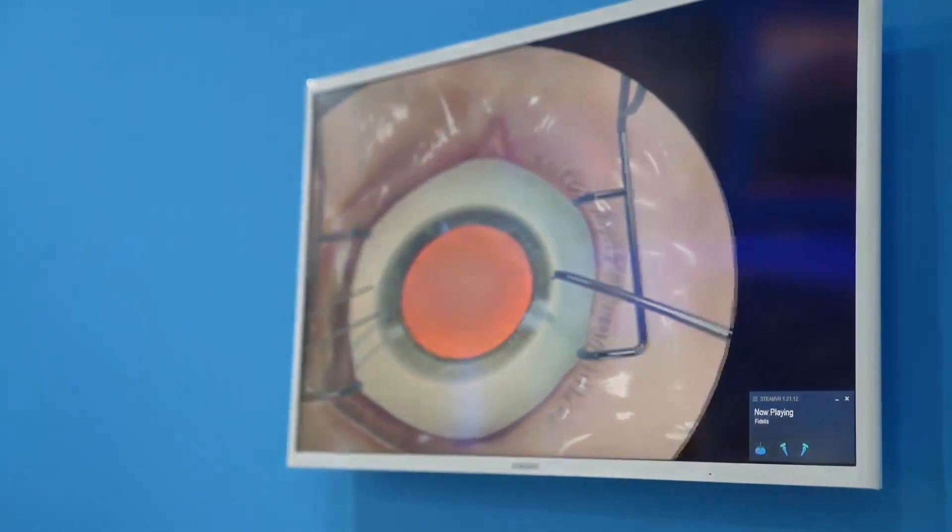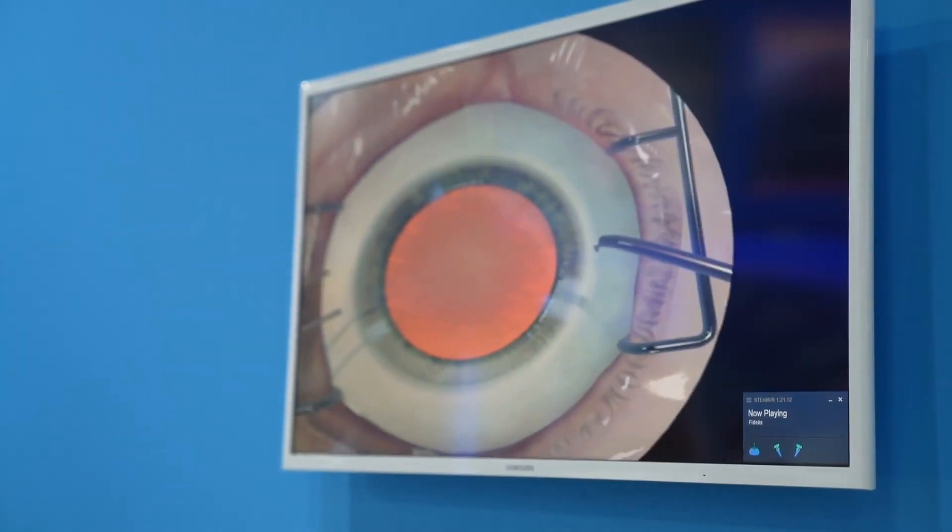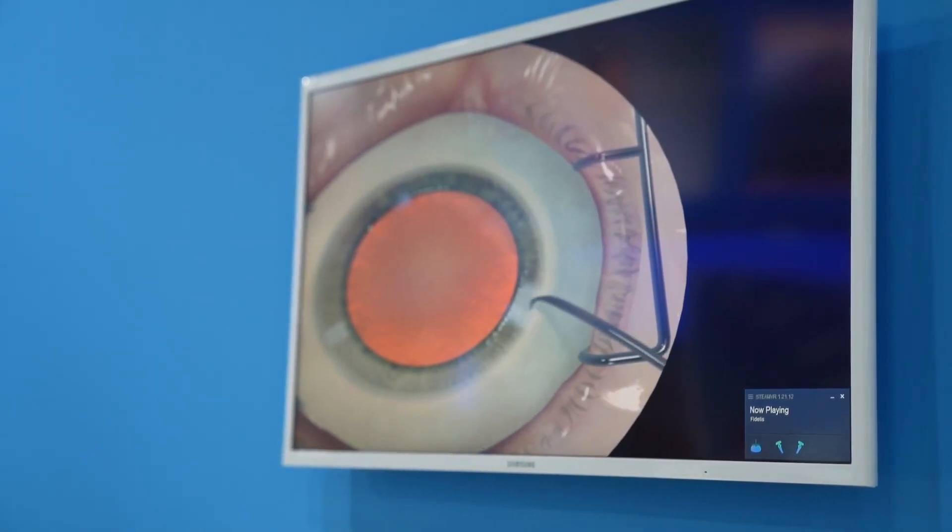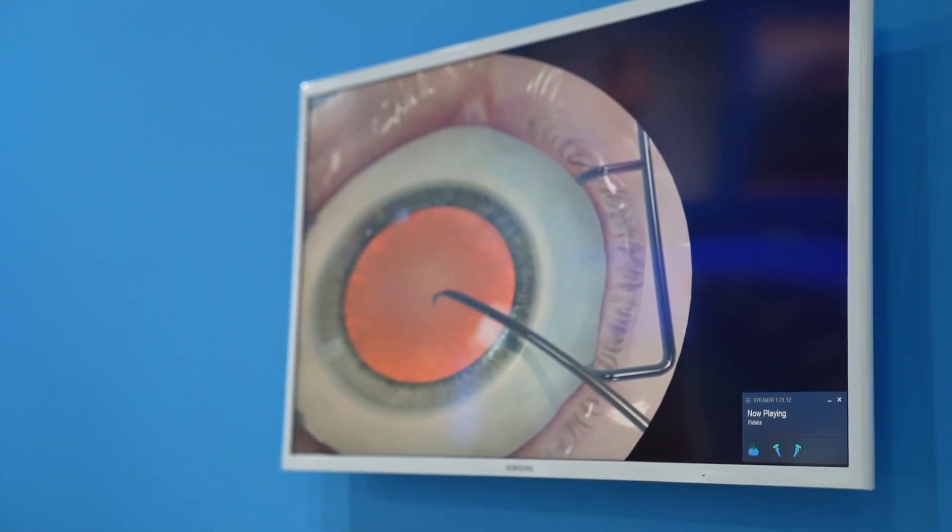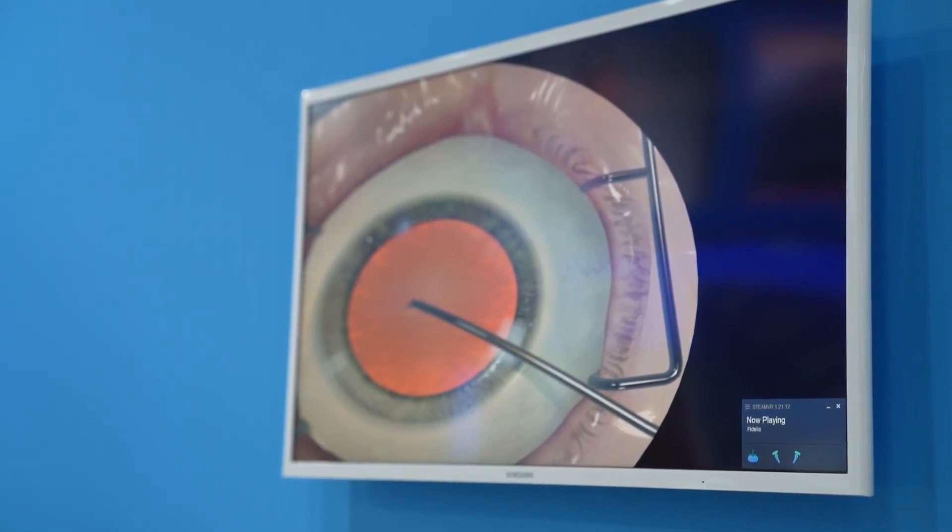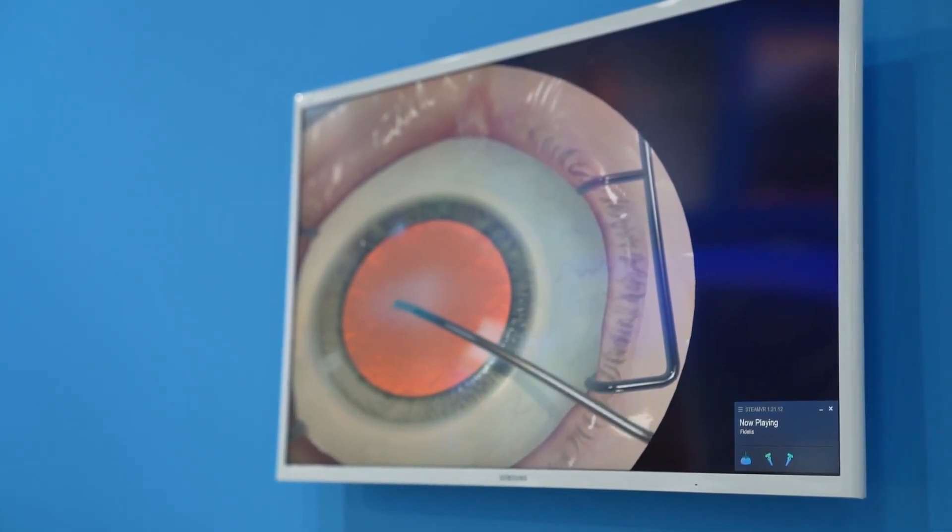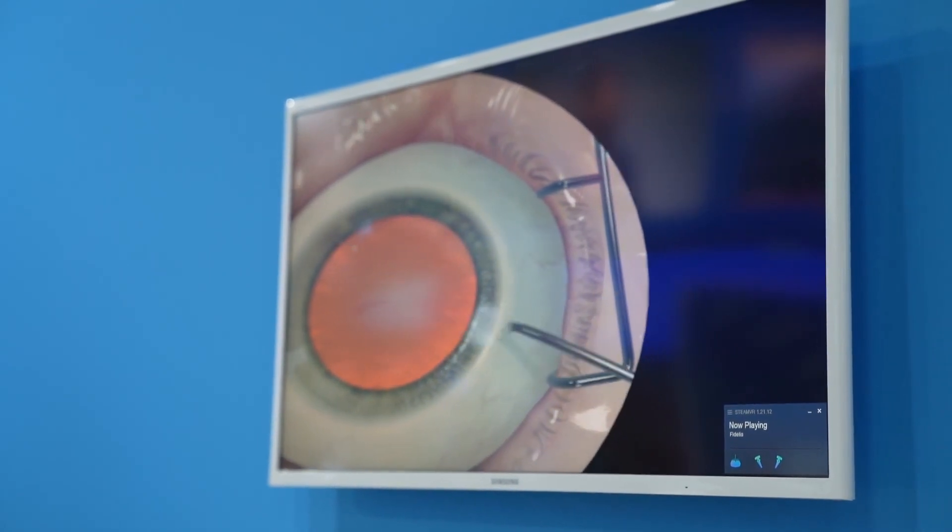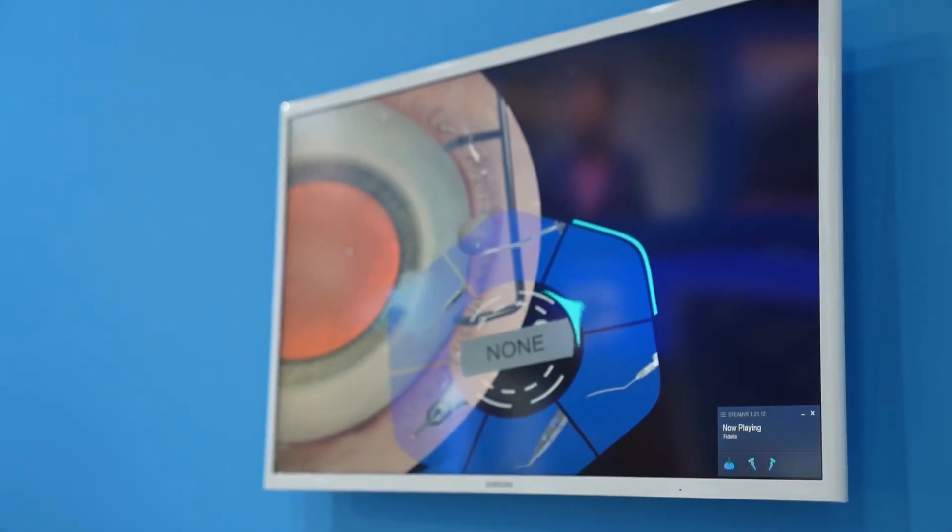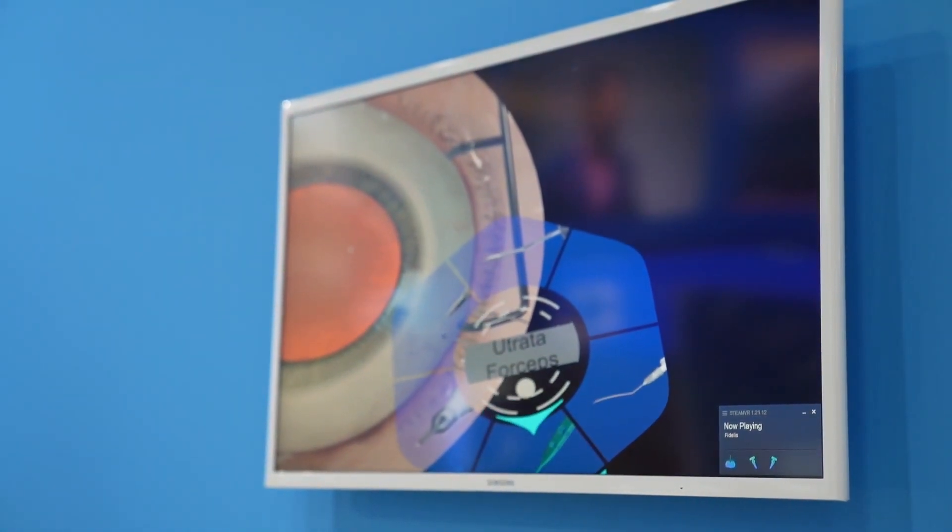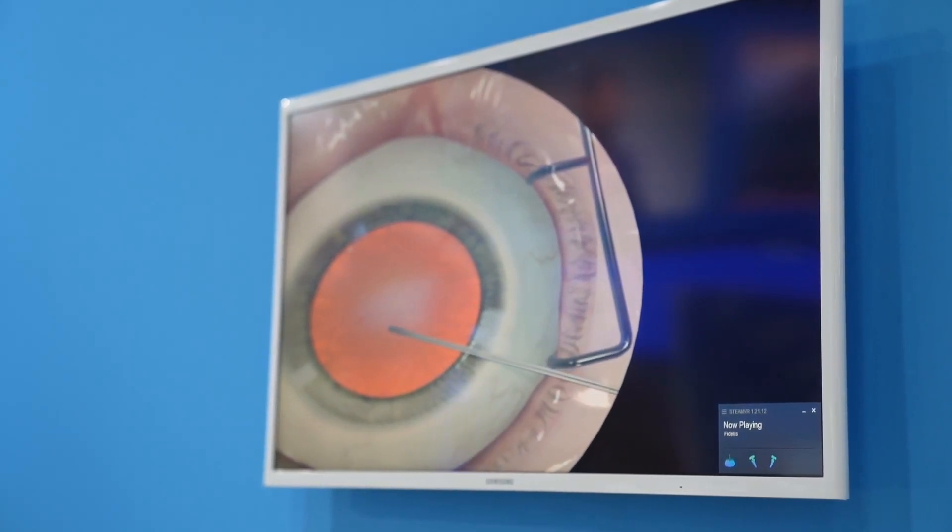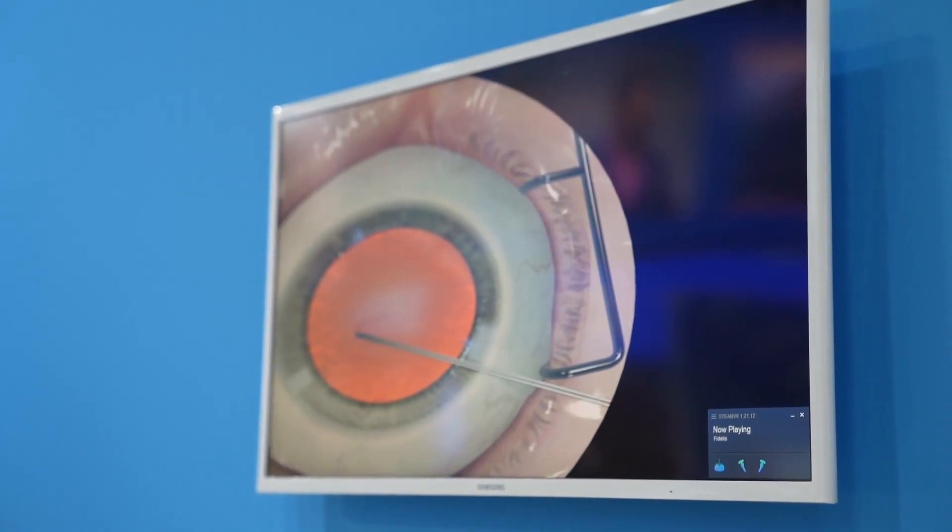We can move forward. Now we'll create a capsule rhexis. Stabilize the eye, create a small incision with the cystatome. With the back button, I can dial around and select the Utrata forceps, close the forceps, come in and grasp.